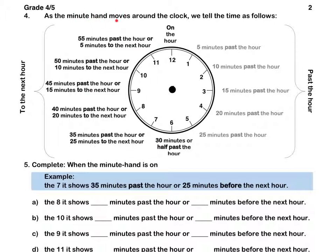As the minute hand moves around the clock, we tell the time as follows. We have done up until half past the hour or 30 minutes past the hour. Now, if the minute hand is on the 7, it means that it is 35 minutes past the hour or 25 minutes until the next hour. If it is on the 8, it means 40 minutes past the hour or 20 minutes until the next hour. If it is on the 9, it means 45 minutes past the hour or 15 minutes to the next hour.